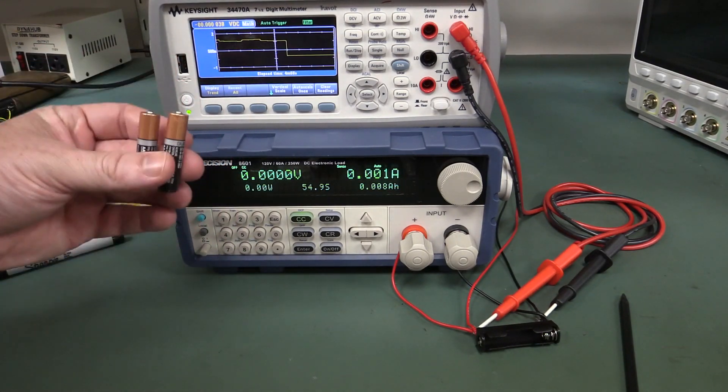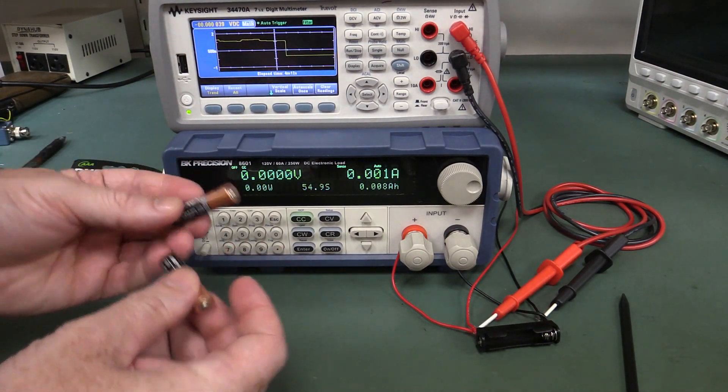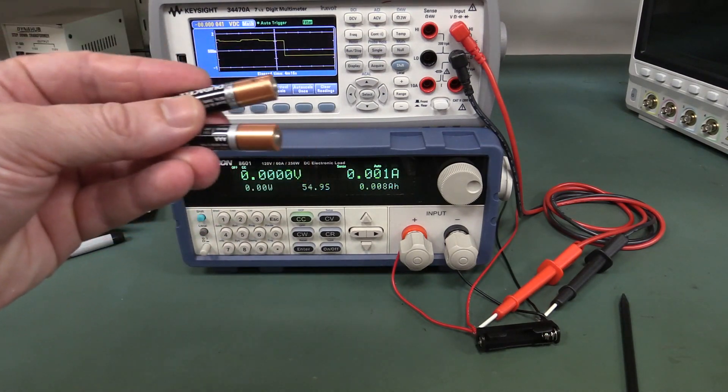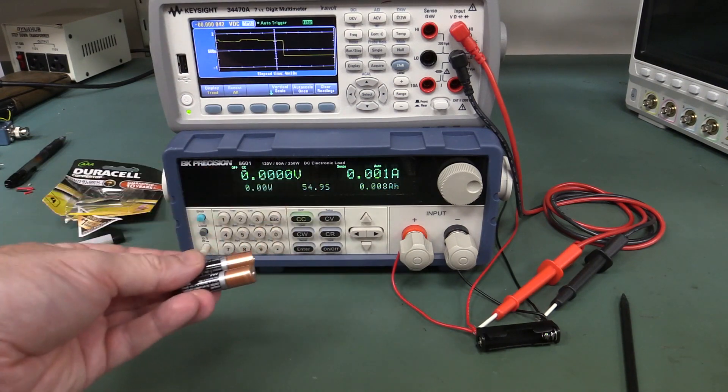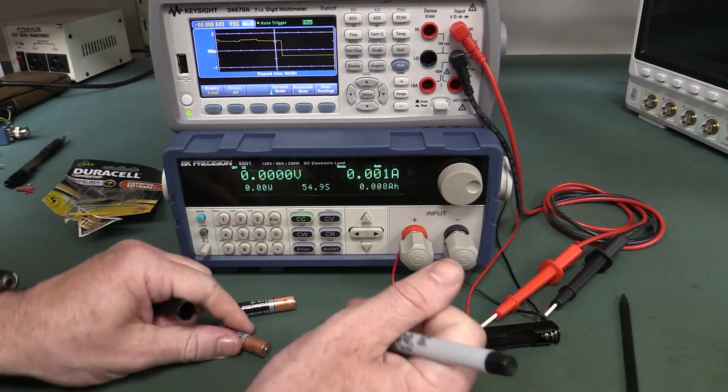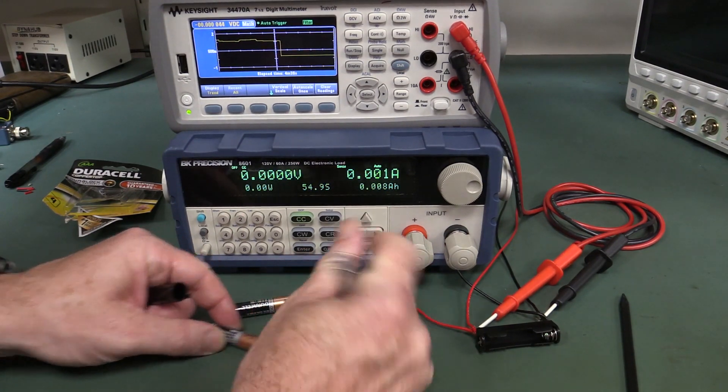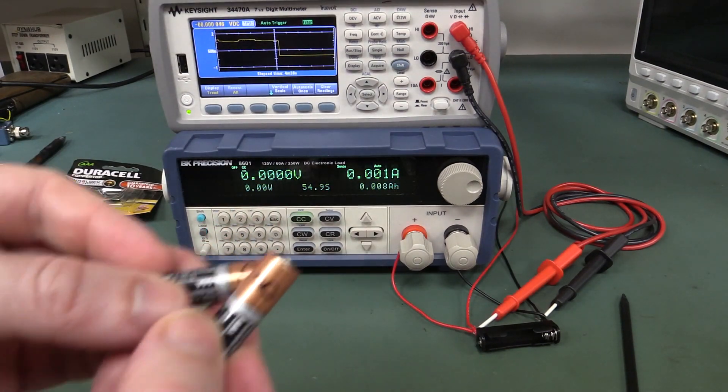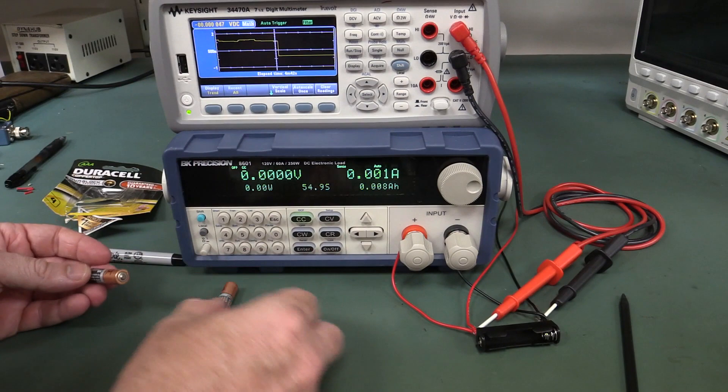I've got two fresh AAA Duracell's here. Mark assures me it works with AA's and AAA's. I'll use AAA's because it's easier to discharge these things. So first, let's label these A and B, so we know exactly what we've got.